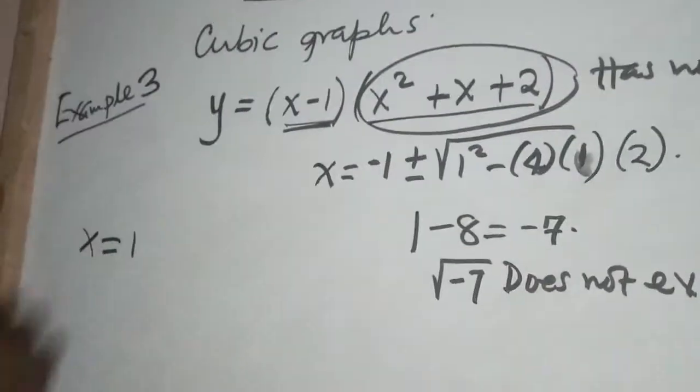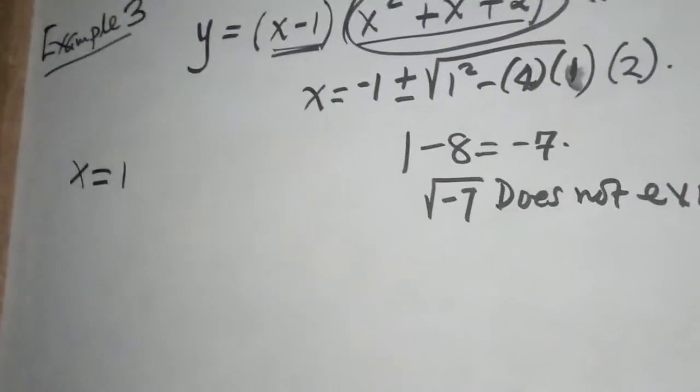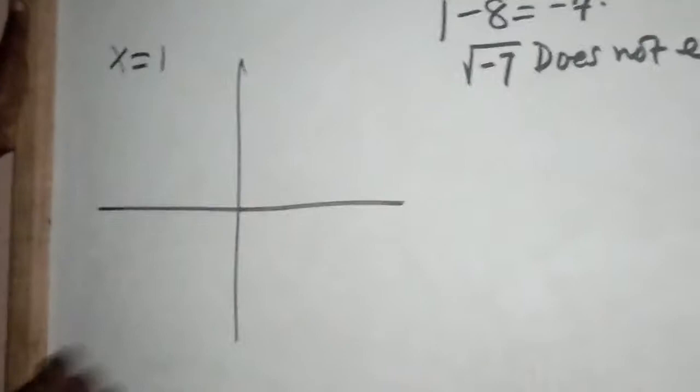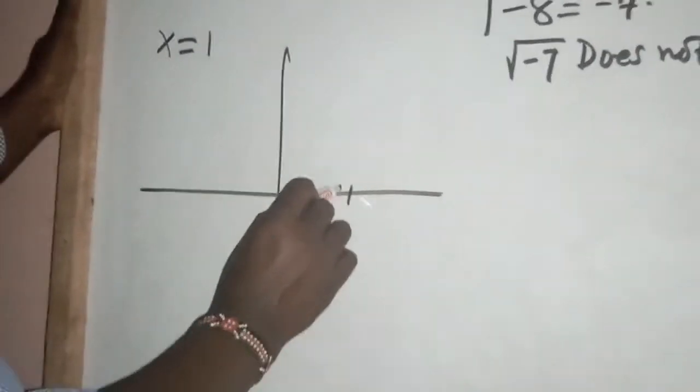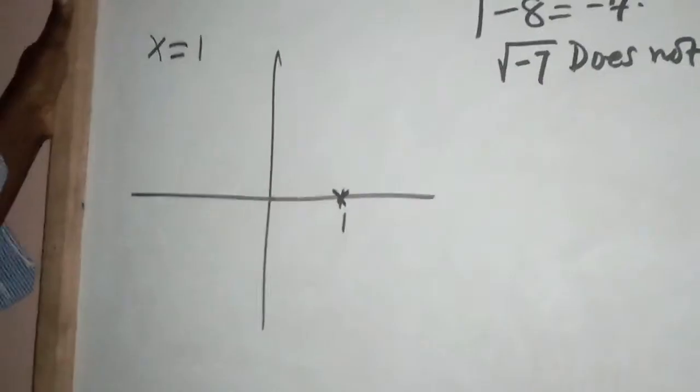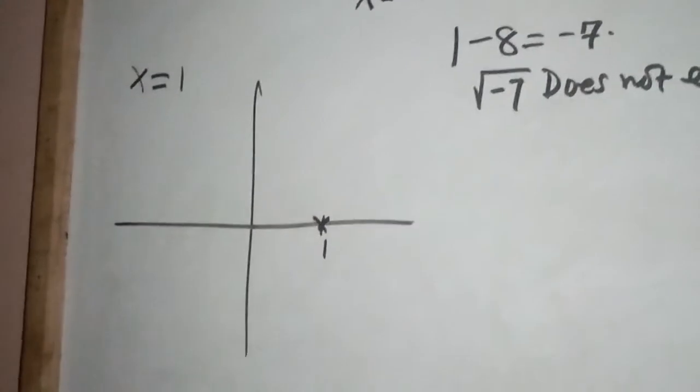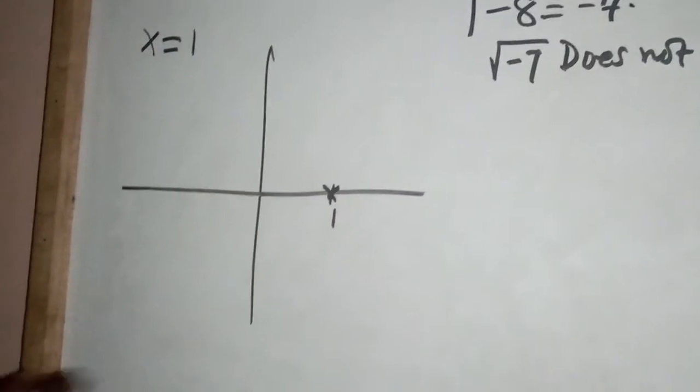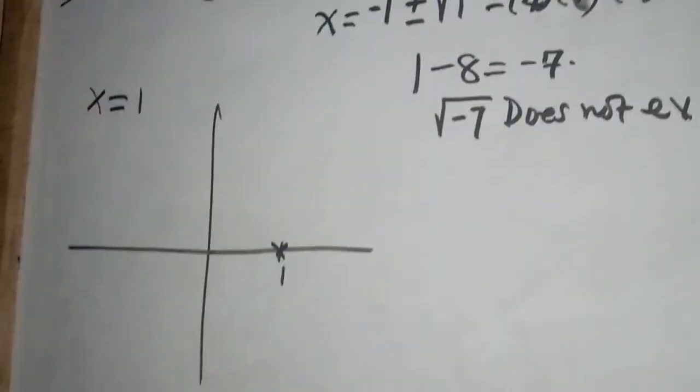If we need to sketch that graph, that is positive one. It's one point where the graph passes. But we could be interested to know where does the graph cut the y-axis.